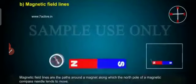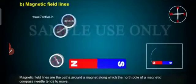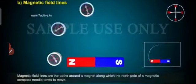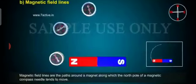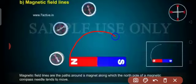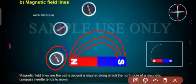Here we can see the magnetic compass. It has four sides: north, south, west, east. When you see, all the iron filings are attracted by the magnet and they give one shape — some lines are formed. These lines are called magnetic lines. So how it is attracted, now we will see how the magnetic compass will help us to draw the magnetic field lines.